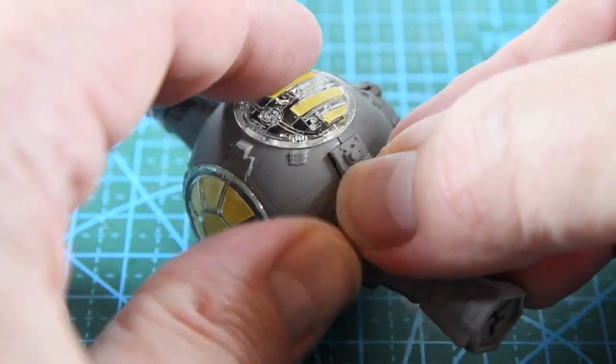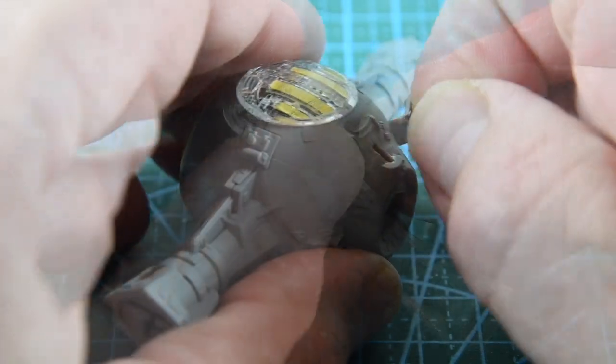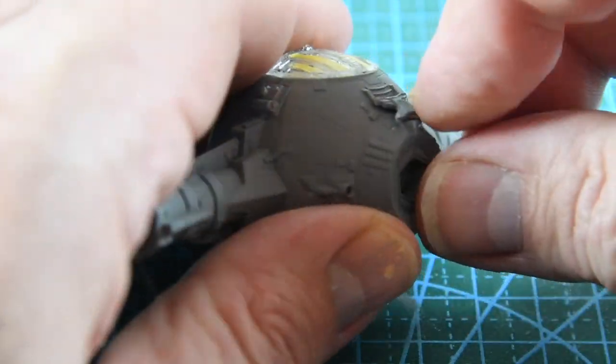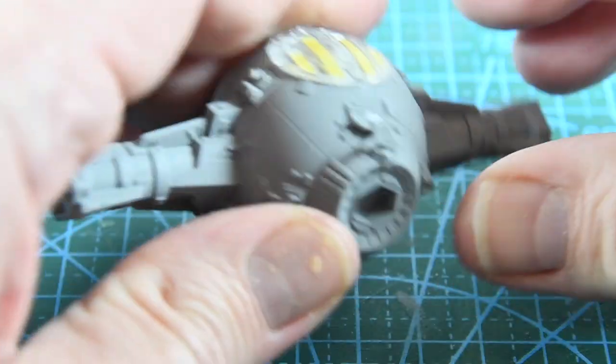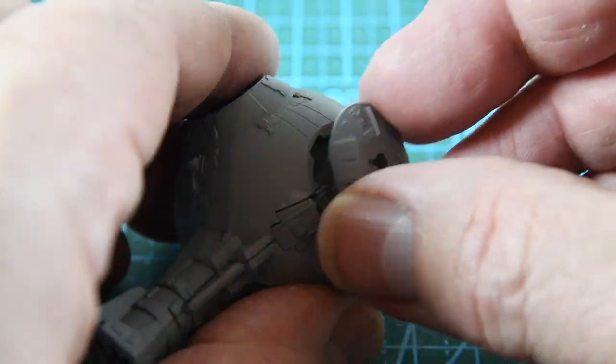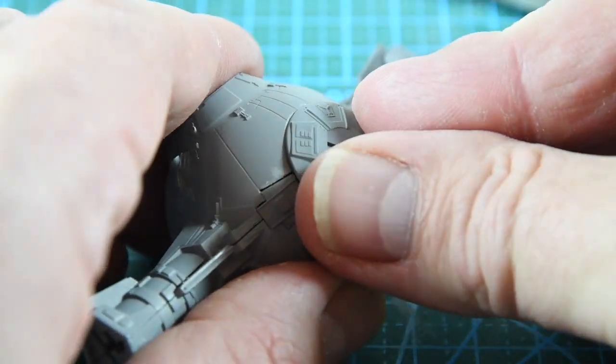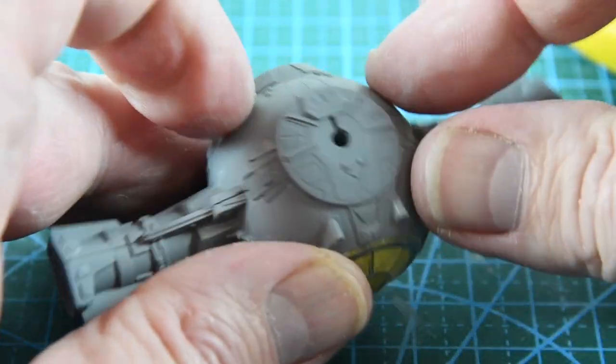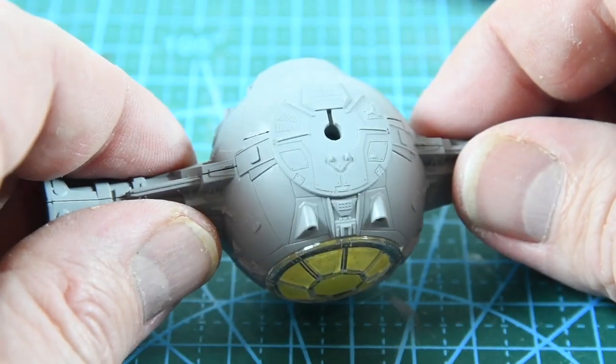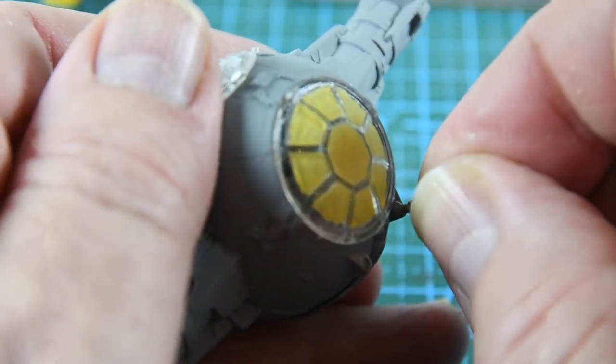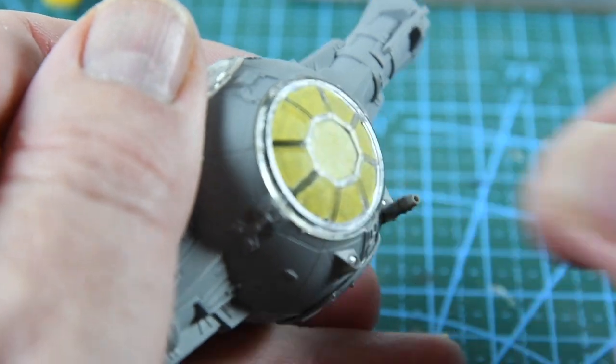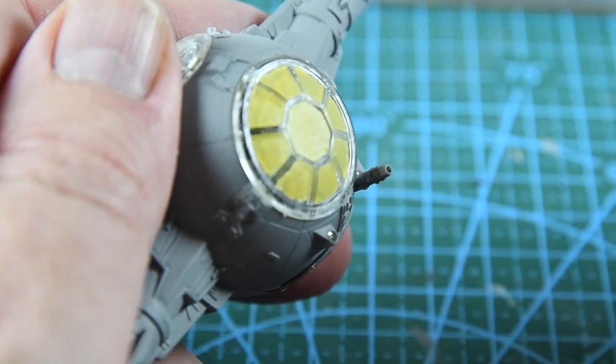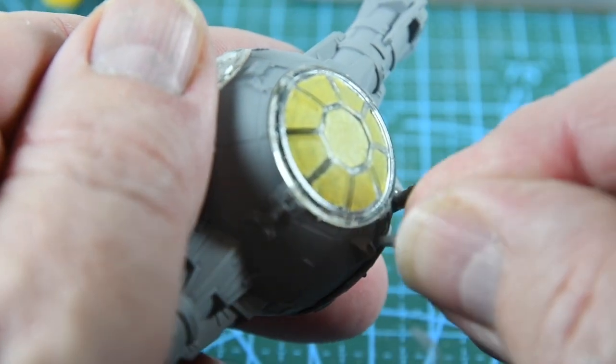There are a few extra detail pieces here to add around the body. This bottom cap can just be twisted on if you want to be able to remove it later, but I'm gluing it in place. Lastly, I'm going to fit the laser cannon barrels before the body gets another coat of primer and all-over mid-grey paint.